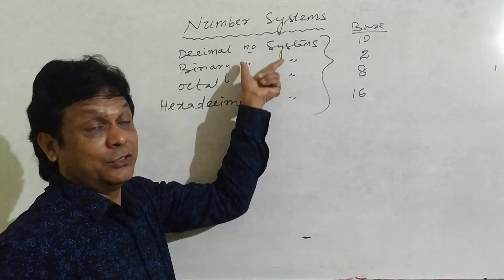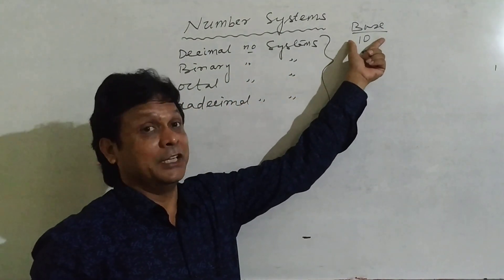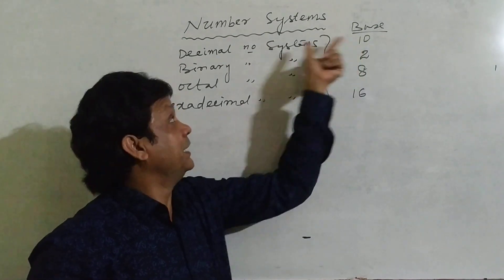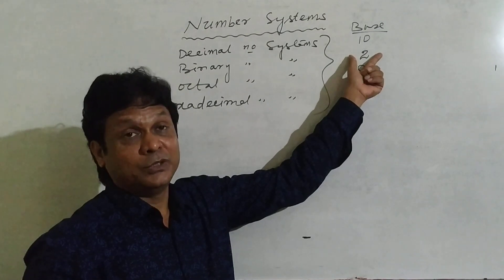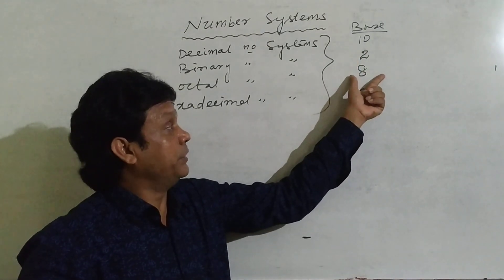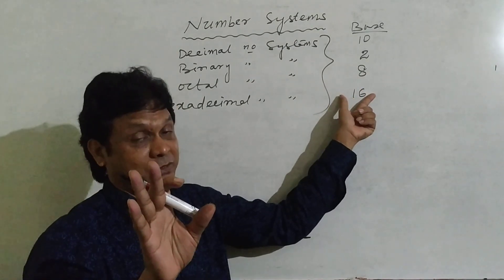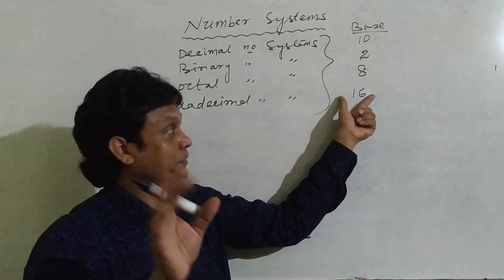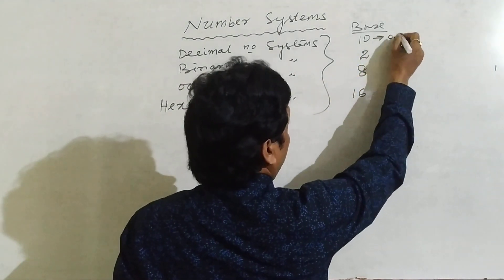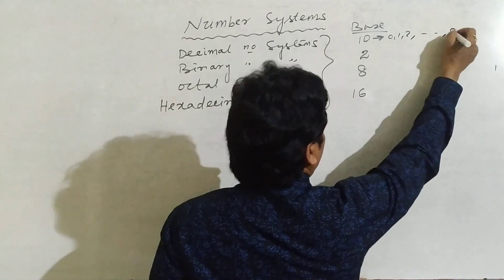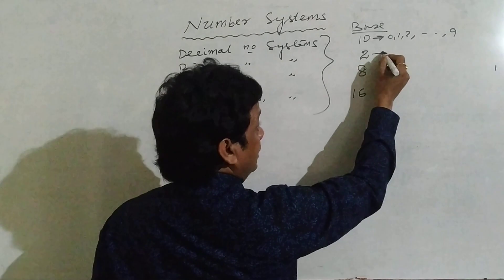Now, what are the digits used in decimal, binary, octal, and hexadecimal? If the base is 10, there are 10 digits. If the base is 2, then 2 digits are used. If the base is 8, then 8 digits are used, and in hexadecimal, 16 digits are used. In decimal, the digits used are 0, 1, 2, 3 up to 9 — all starting from 0, so there are 10 digits. In binary, only 0 and 1 are used.